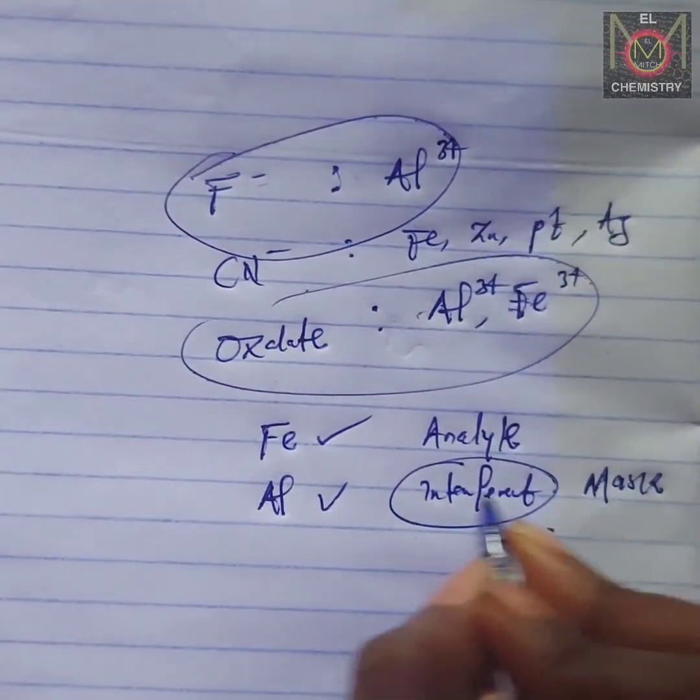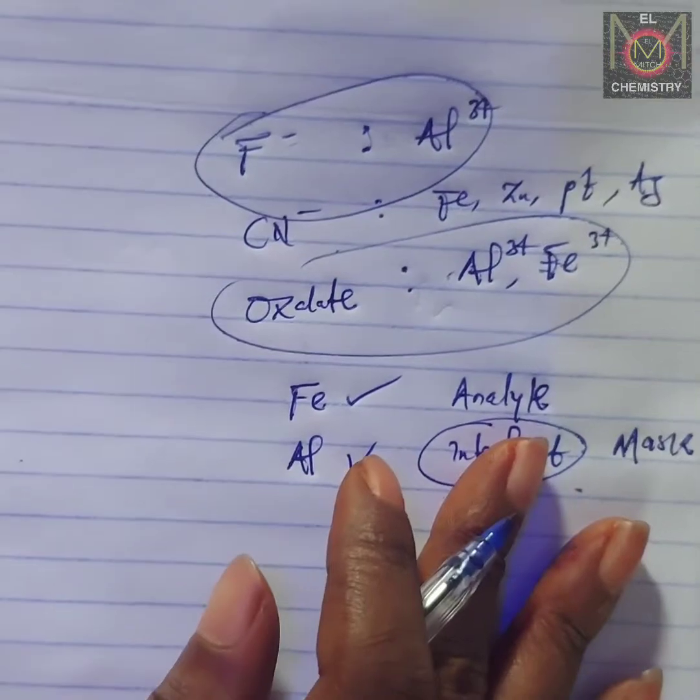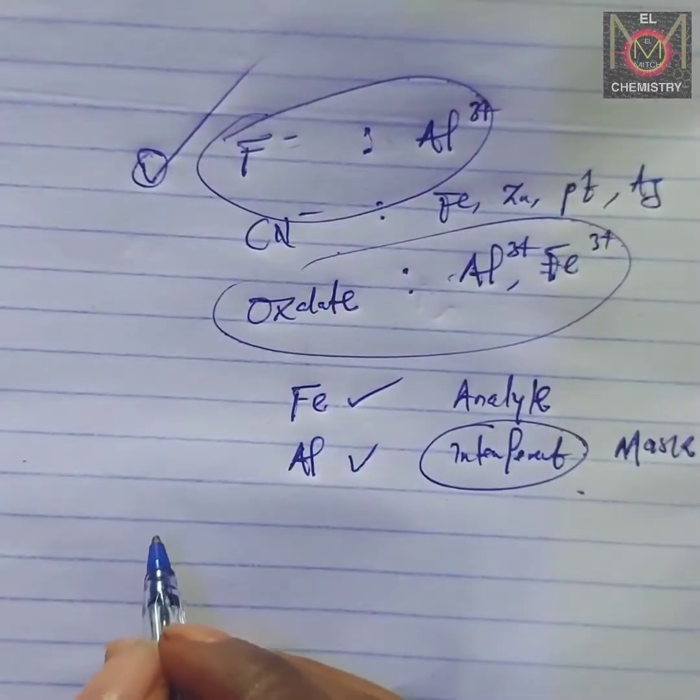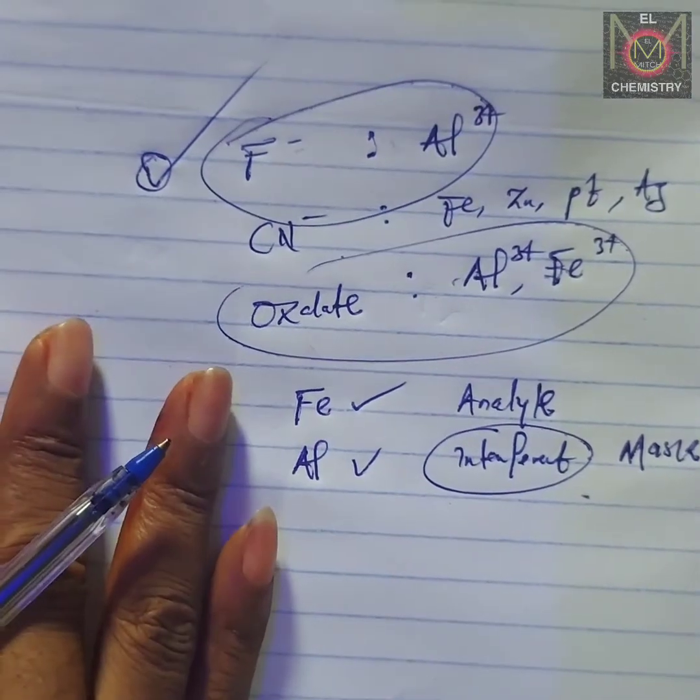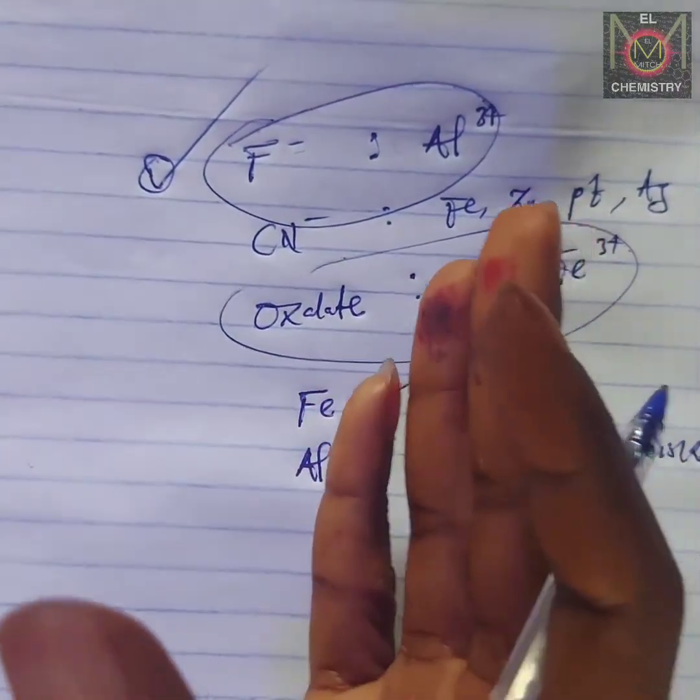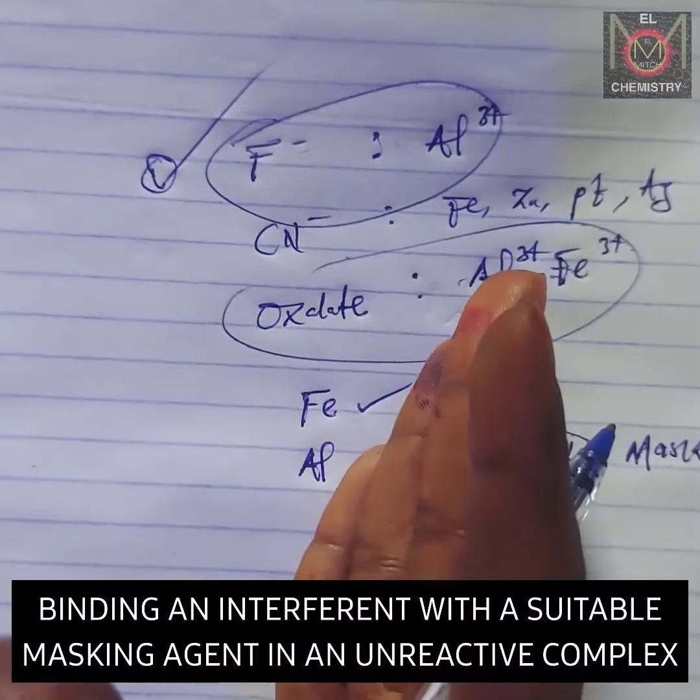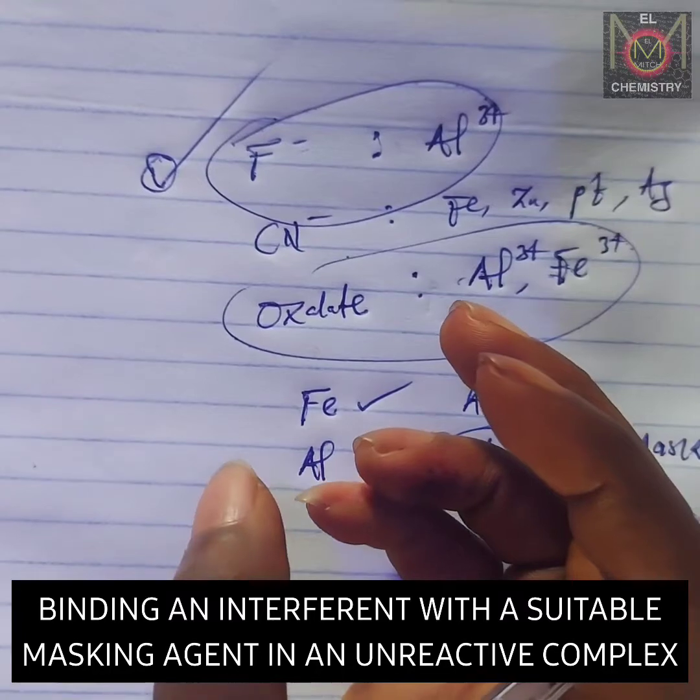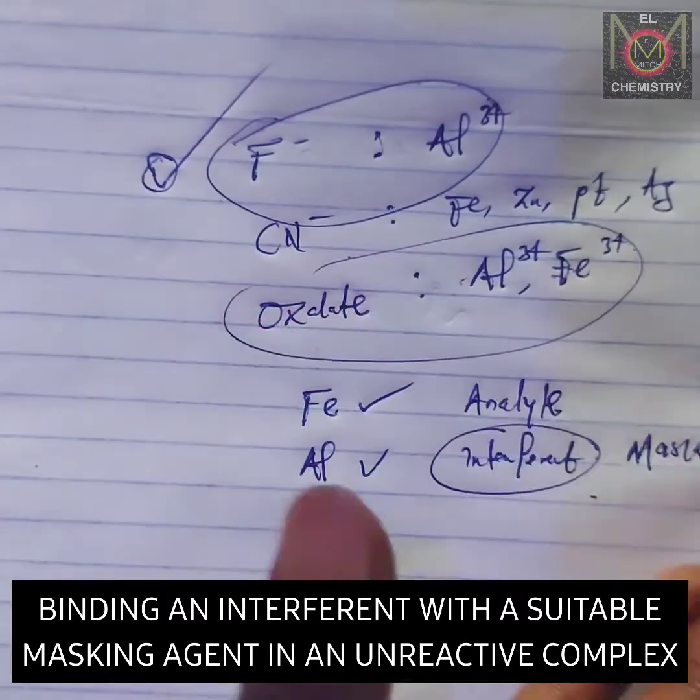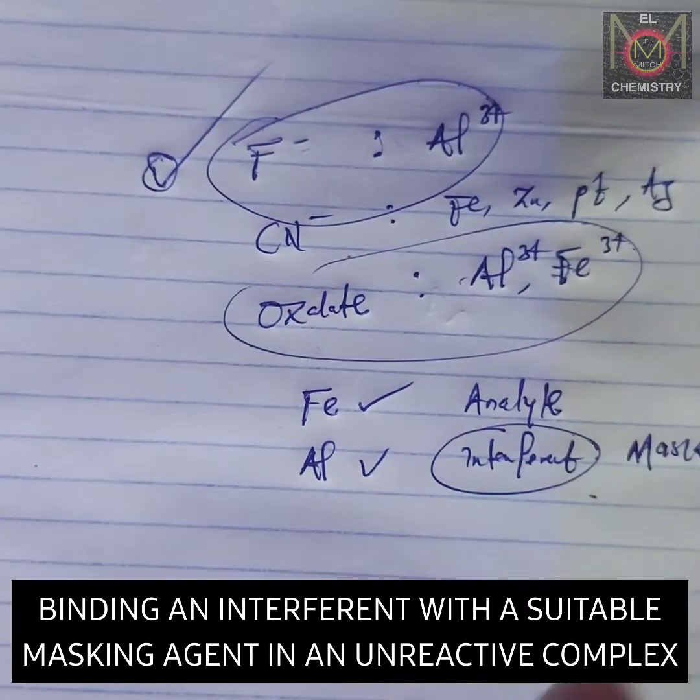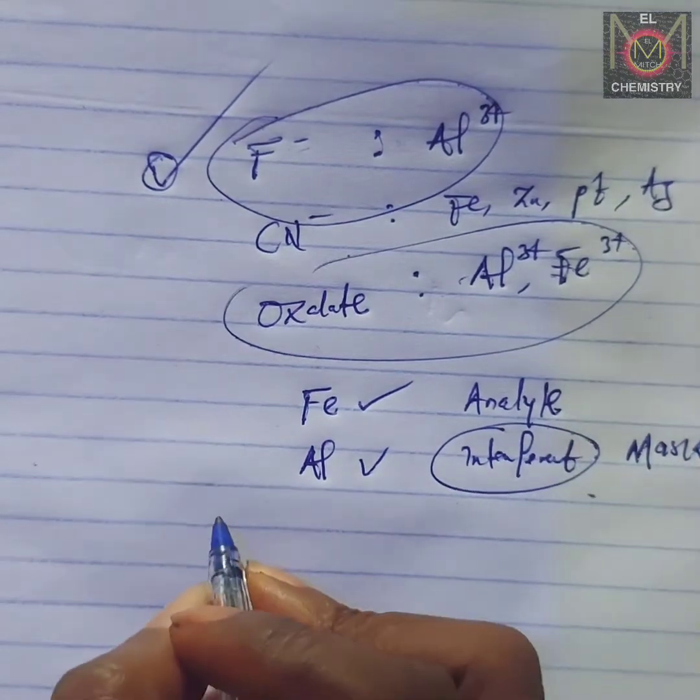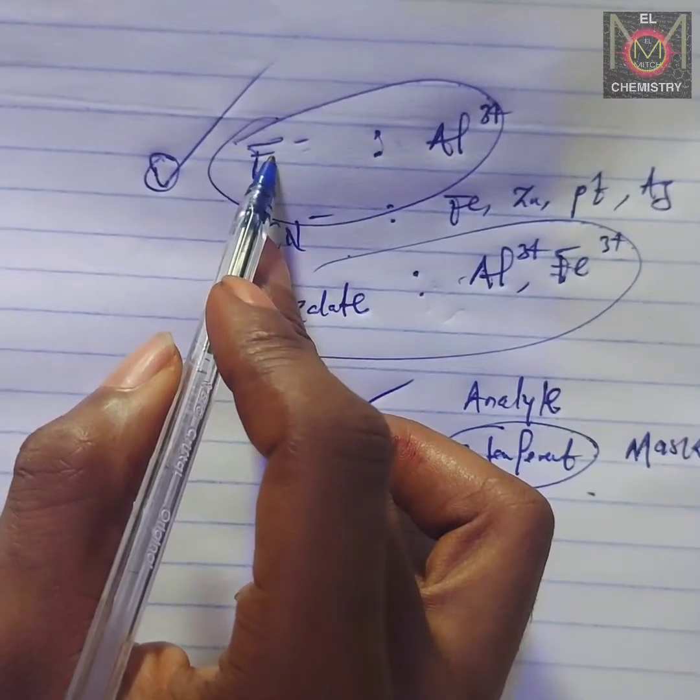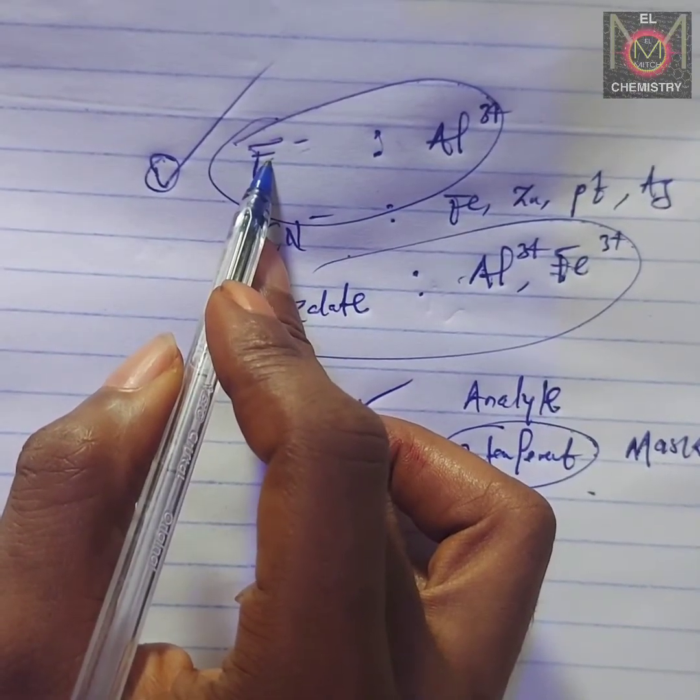We don't need iron, so we're going to mask aluminum. We all know that the suitable masking agent here is fluoride ion. Now, masking is like binding it in an unreactive complex. Once this forms the complex, you can actually filter it off and get to analyze your analyte.